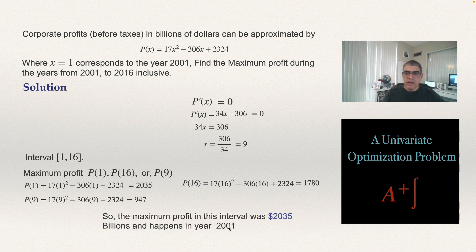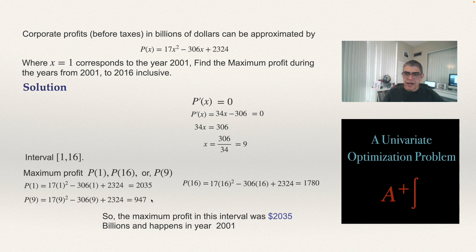This is an application of the Extreme Value Theorem: the maximum or minimum on a closed interval occurs either at a boundary or at a critical value. The maximum profit was 2035 billion dollars in 2001. I hope you found this explanation useful — thank you.